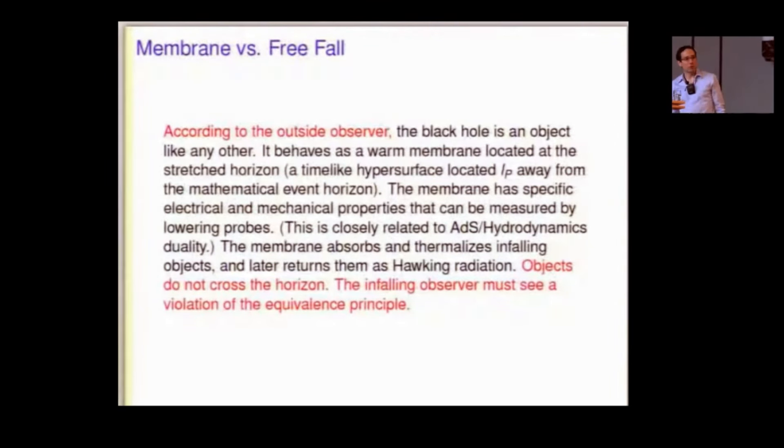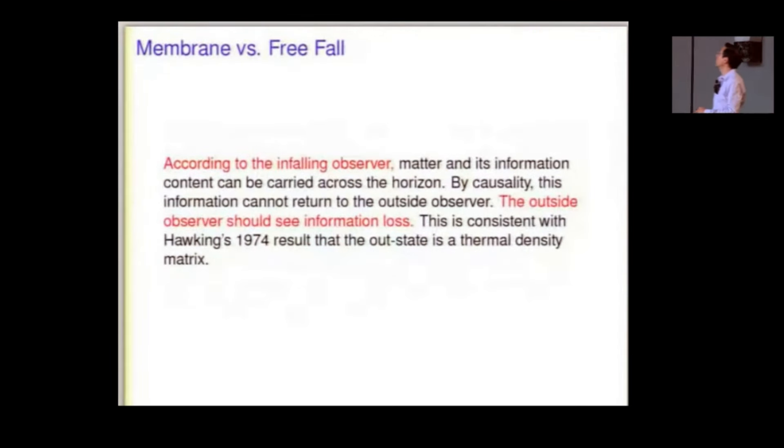From his point of view, something special does happen to all the people who fall towards the horizon. They hit that membrane that he can investigate all sorts of physical properties of. They get thermalized by it and they eventually get returned to the outside as Hawking radiation. To him, it seems clear that an infalling observer should see a violation of the equivalence principle, but he just can't check himself. He doesn't want to fall in. He wants to be the outside observer. Otherwise, he has an identity problem.